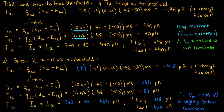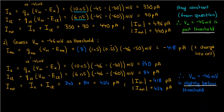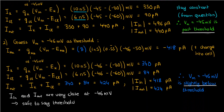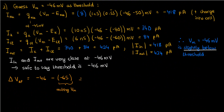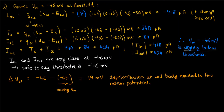At minus 45 mV we were above threshold, and at minus 46 mV we're slightly below. The actual threshold is somewhere between the two. Since the two currents at minus 46 mV differ by only 6 picoamps, the threshold is closer to minus 46 than to minus 45. It's safe to conclude the threshold is approximately minus 46 millivolts. Starting from a resting potential of minus 65 mV, we need to depolarize by 19 millivolts to reach threshold.